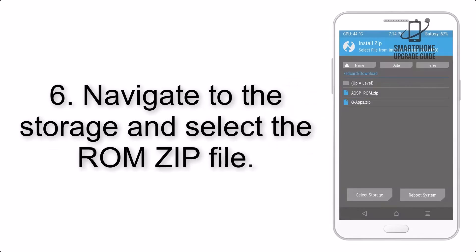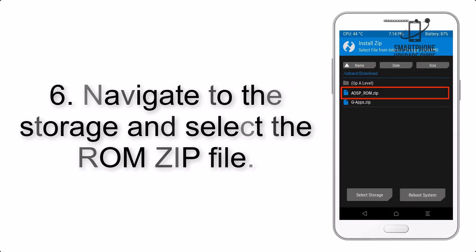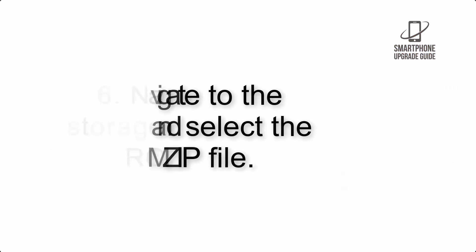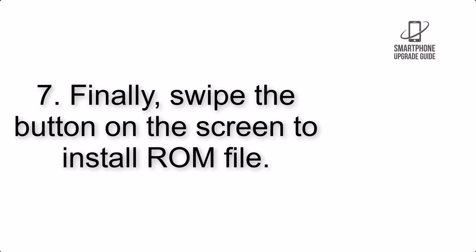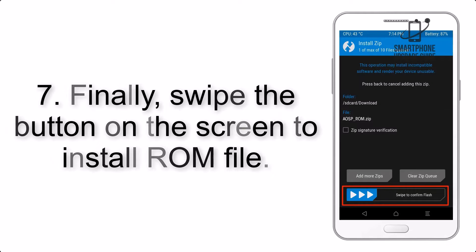Step 6: Navigate to the storage and select the ROM zip file. Step 7: Finally, swipe the button on the screen to install the ROM file.